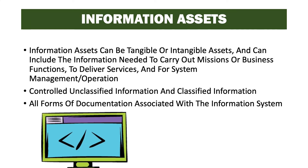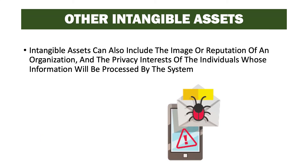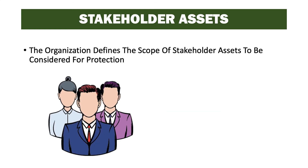Information assets can be tangible or intangible and can include information needed to carry out mission or business functions, to deliver services, and for system management and operation. Controlled unclassified information and classified information are also forms of information assets, as are all forms of documentation associated with the information system. Other intangible assets can include the image or reputation of an organization and the privacy interests of individuals whose information will be processed by the system.